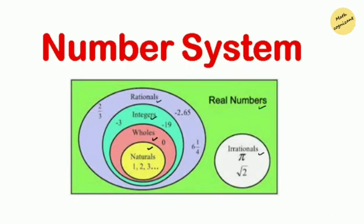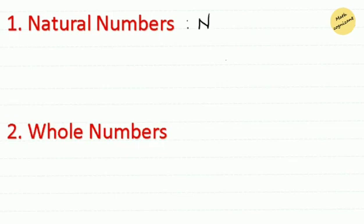Therefore, the number system is a system representing numbers. It is also called the system of numeration and it defines a set of values to represent a quantity.